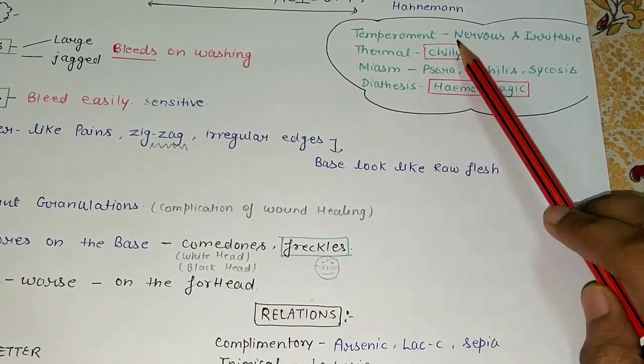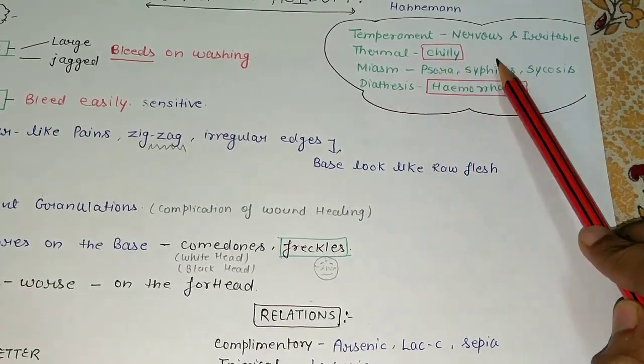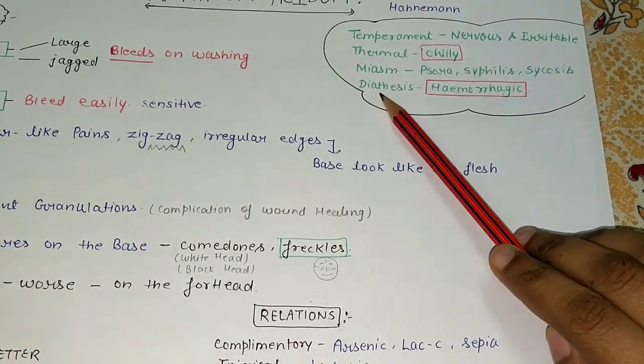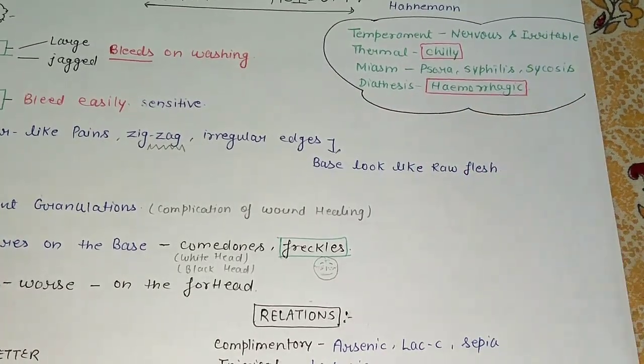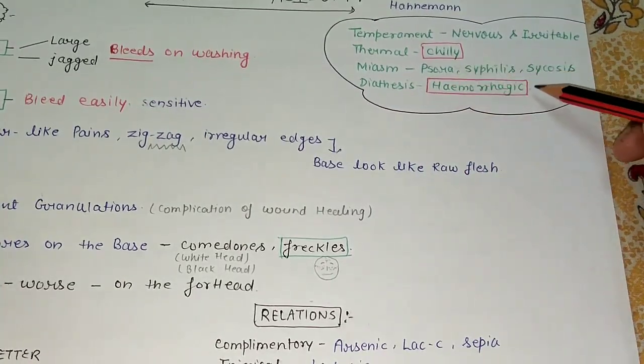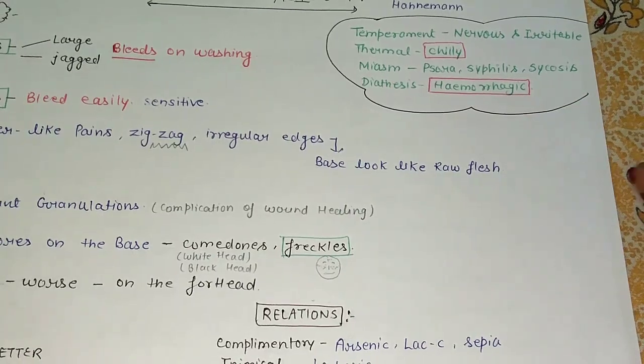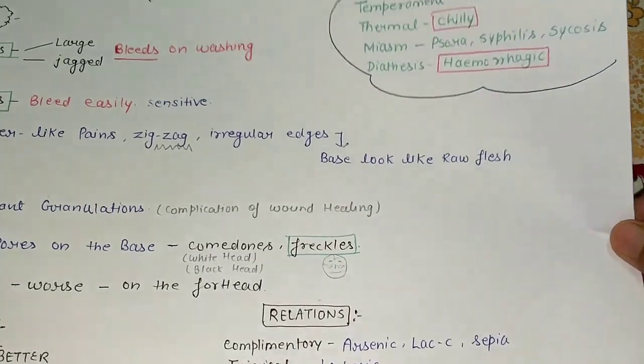Thermal is chilly. Miasm is psora, syphilis, and sycosis. Diathesis is hemorrhagic. That's why I have covered it in red. How is this diathesis hemorrhagic? Because all the symptoms we will see in the skin, we will see bleeding in the skin.